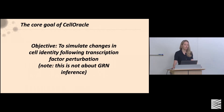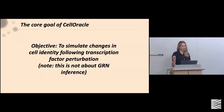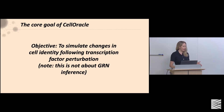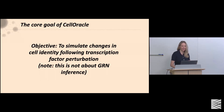This takes us into Cell Oracle. The core objective of Cell Oracle — which I would put in the same class as the previous approaches but with a different underlying method — is to simulate changes in cell identity following transcription factor perturbation. The key question is how transcription factors regulate cell identity. We would like to stress that this is not about GRN inference. Cell Oracle uses GRN inference to simulate changes in cell identity, but GRN inference itself is not the goal. I'll also touch on the need for datasets for proper benchmarking of these approaches.